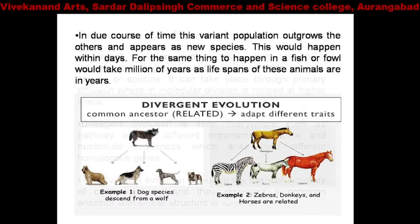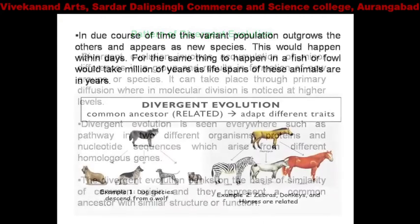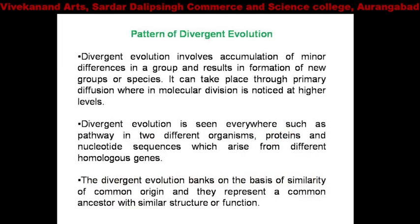Divergent evolution involves accumulation of minor differences in a group and results in the formation of new groups or new species. It takes place through primary diffusion wherein molecular division is noticed, and at the higher molecular level, variation is noticed.